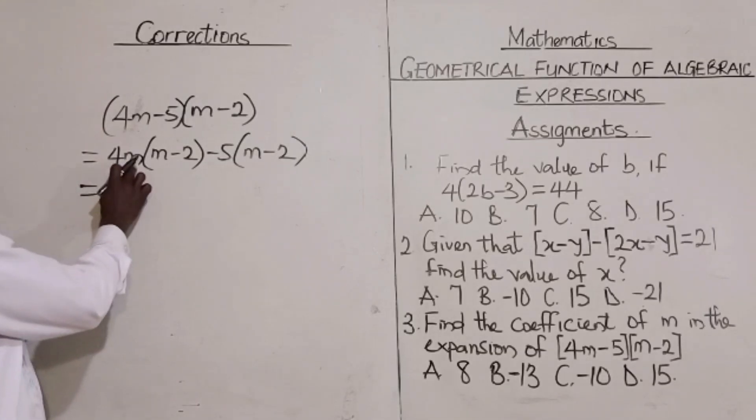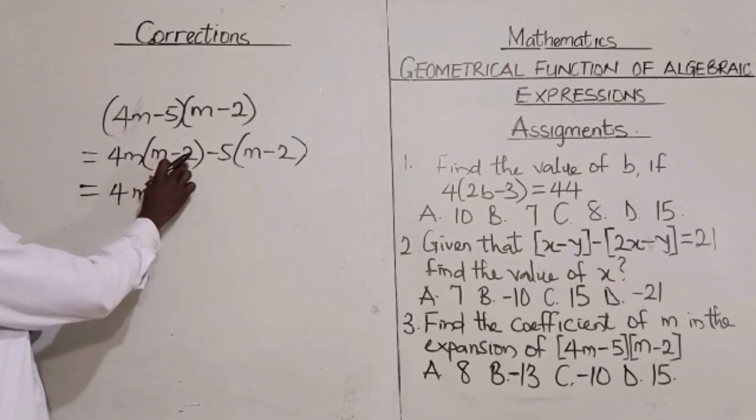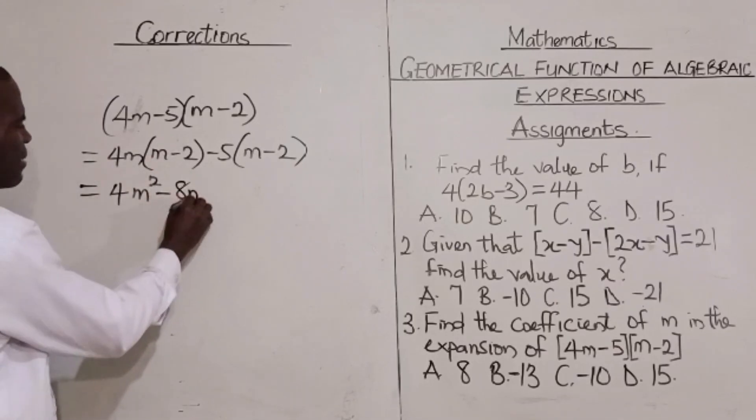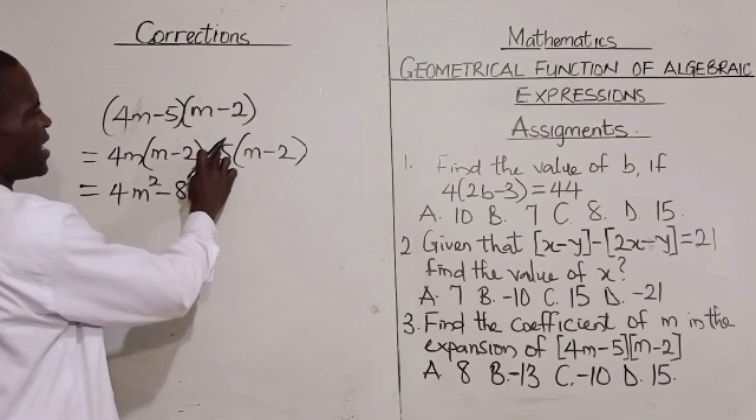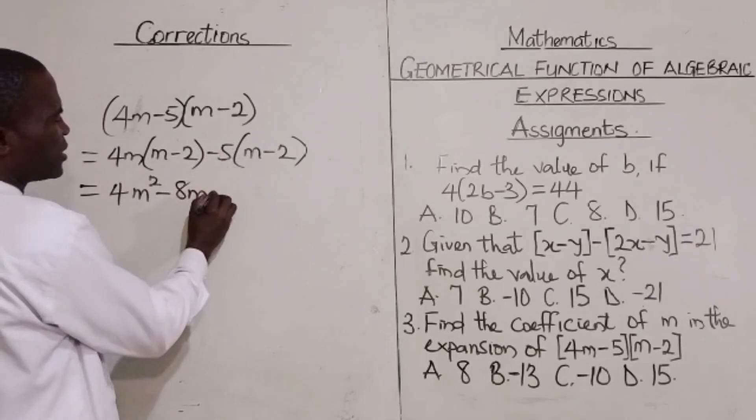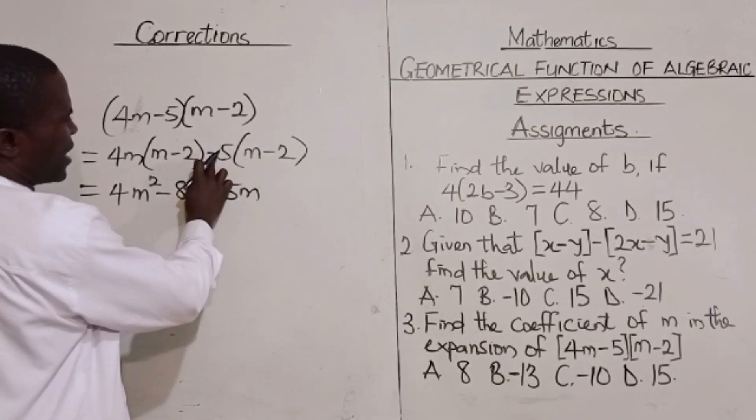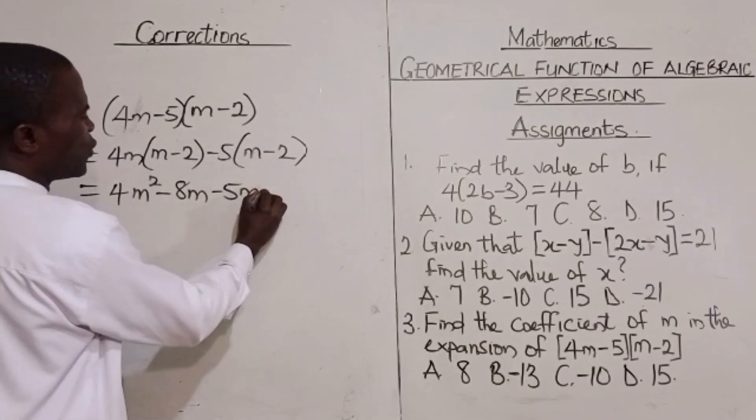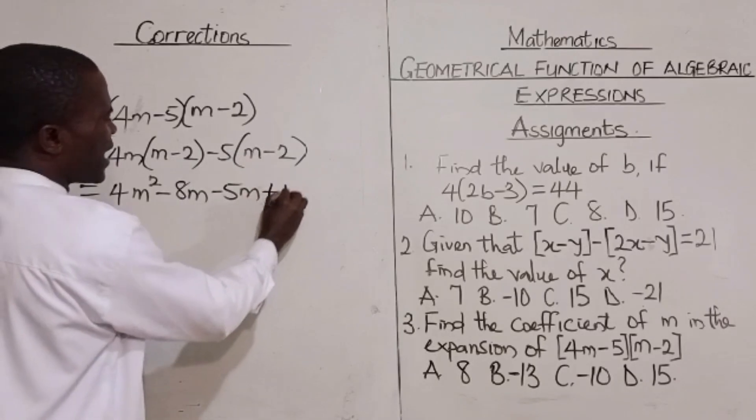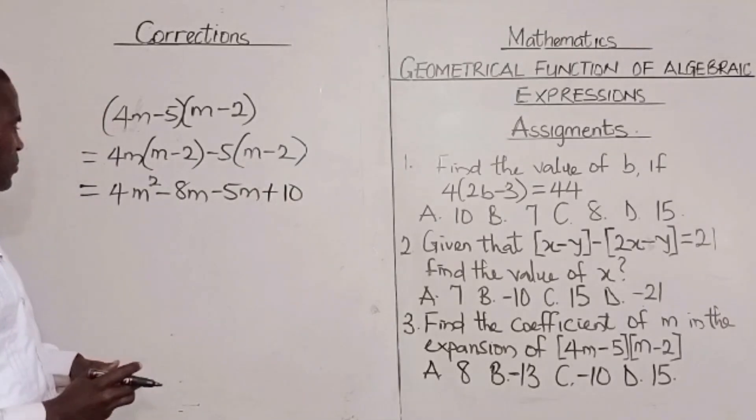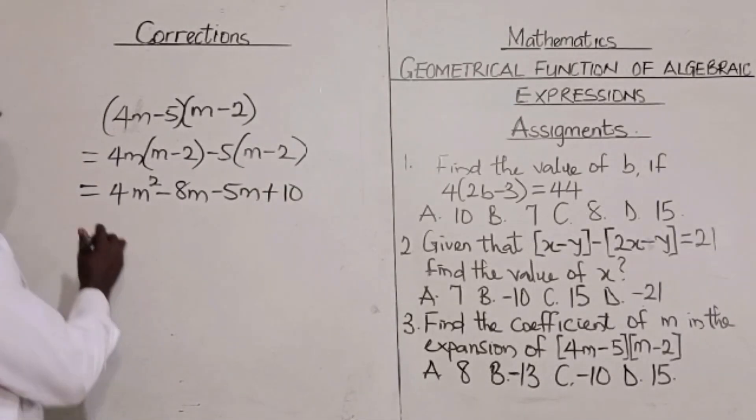So what do we do next? Next, we are going to have 4m times m, that is 4m squared. Then 4m times minus 2, that is minus 8m. Here is minus 5 times m, it gives us minus 5m. Then minus 5 times minus 2 gives us plus 10. I want to believe we are following.